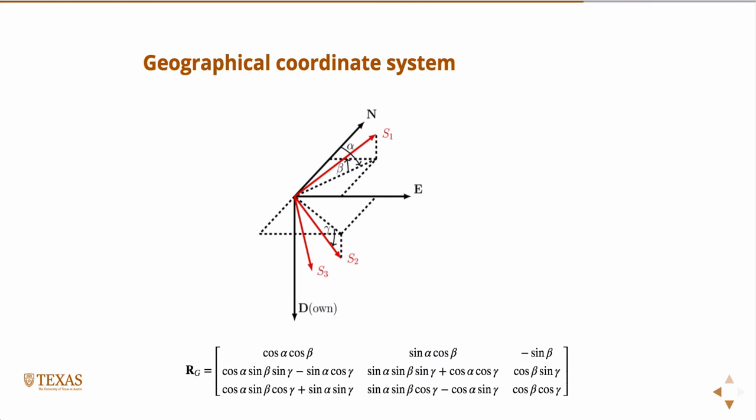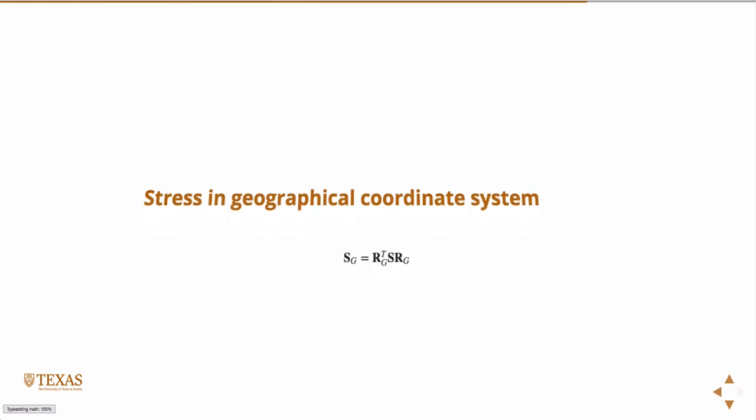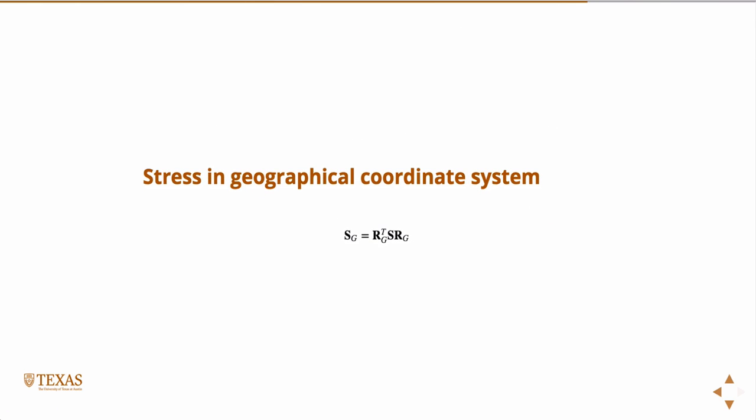Or you could take it a step further and say, you could give it the principal stresses, alpha, beta, and gamma, and it'll return the stress in the geographic coordinate system. Remember, when we in the linear algebra lecture, we talked about how tensors or matrices transform. Well, they transform via this formula. So, the stress in the geographic frame is just going to be the stress, the principal stresses, RT, RG transpose times that times RG. And so, this is sort of a, after we work one or two by hand, then this is sort of a perfect candidate to write a little program for. Because then you'll never get it wrong.